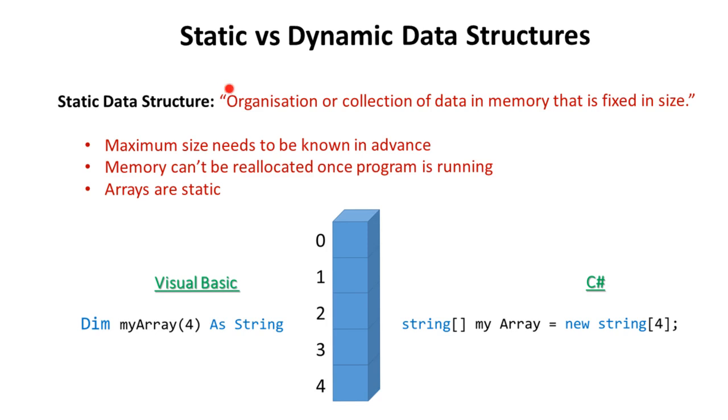Static data structures are organisations or collection of data in memory that are fixed in size. In other words the maximum size of the data structure needs to be known in advance. When the programmer is writing the program it's at that point where they need to decide and declare in program code how big that data structure will need to be. Memory therefore cannot be reallocated once the program is running. An array is an example of a static data structure.